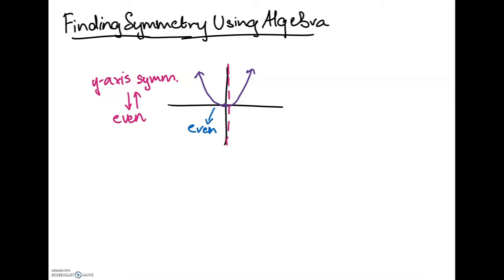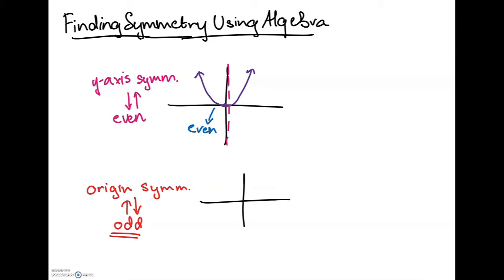We don't know the actual function, but we can say the graph is even, therefore the function is even. Now, origin symmetry and odd functions are similarly related: if a function has origin symmetry — meaning it's symmetric across the origin — then the function is odd, and vice versa. Let's draw a simple graph of an odd function. With the origin in the middle, this graph is symmetric across the origin, therefore it's odd.